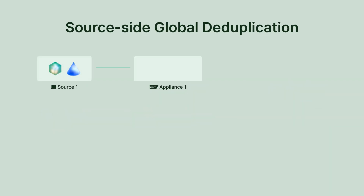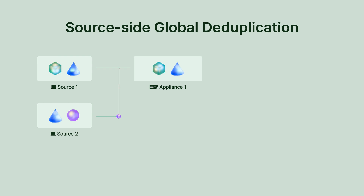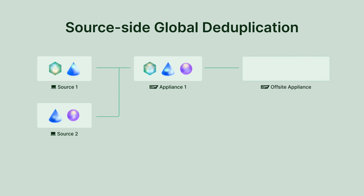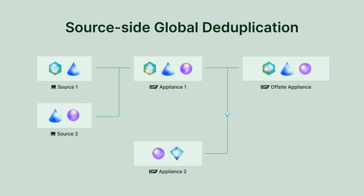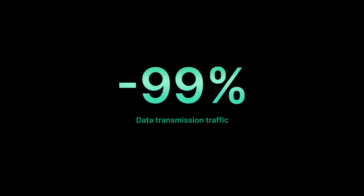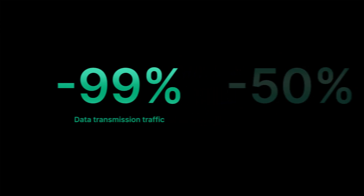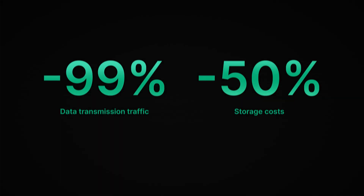The ActiveProtect appliance uses source-side global deduplication technology. This approach eliminates duplicate data at the source, transmitting only the differences, even when backing up across multiple sites to an off-site appliance. This feature reduces duplicate data transmission traffic by up to 99% and over 50% of the storage costs.